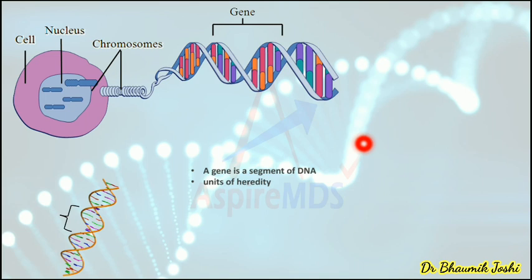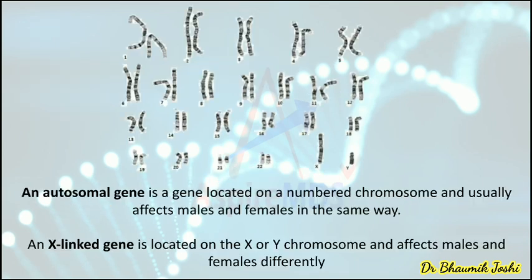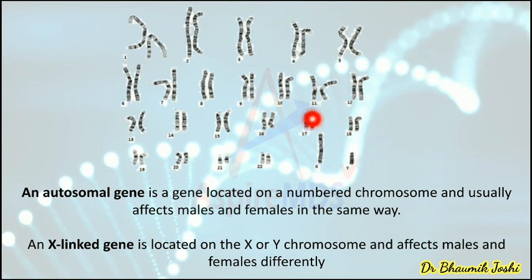What is the function of a gene? The gene is a unit of heredity and gives instructions that make the blueprint of the body. Genes code for the proteins that determine all the characteristics of a person. If a gene is located on chromosomes 1 to 22 we call it an autosomal gene, and if located on the X chromosome we call it an X-linked gene.